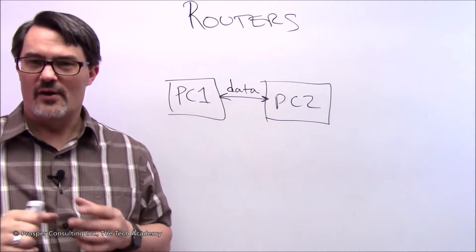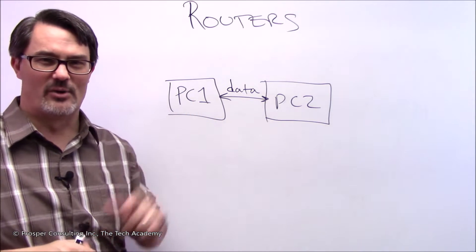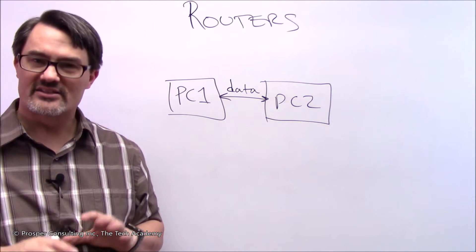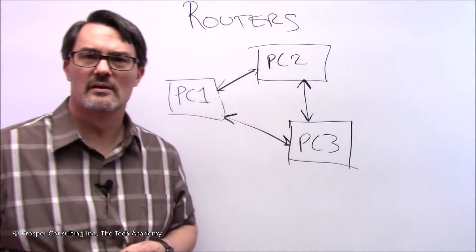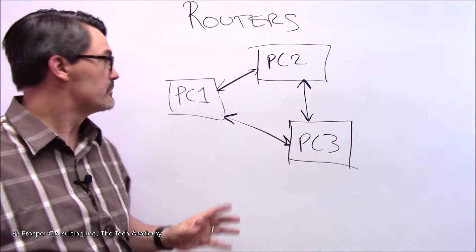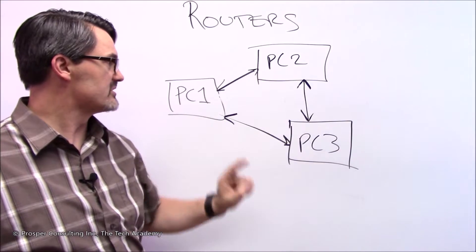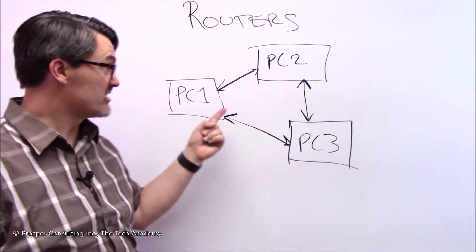Very rarely do you have a network this small with two computers. Now let's look what happens when you add just one more computer. So let's say you had three personal computers: personal computer one, PC two, and PC three, and you decided to connect them like this.